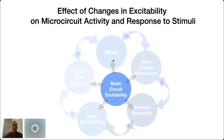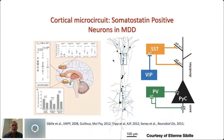Just to look at the effect of changes in excitability at the most minute level on a cortical microcircuit and the response to stimuli. There is an observation — this is work from Professor Etienne Sibyl, who's also here at CAMH — who's done a lot of work observing that there are changes in the expression of somatostatin, specifically related to somatostatin-positive interneurons in major depressive disorder.